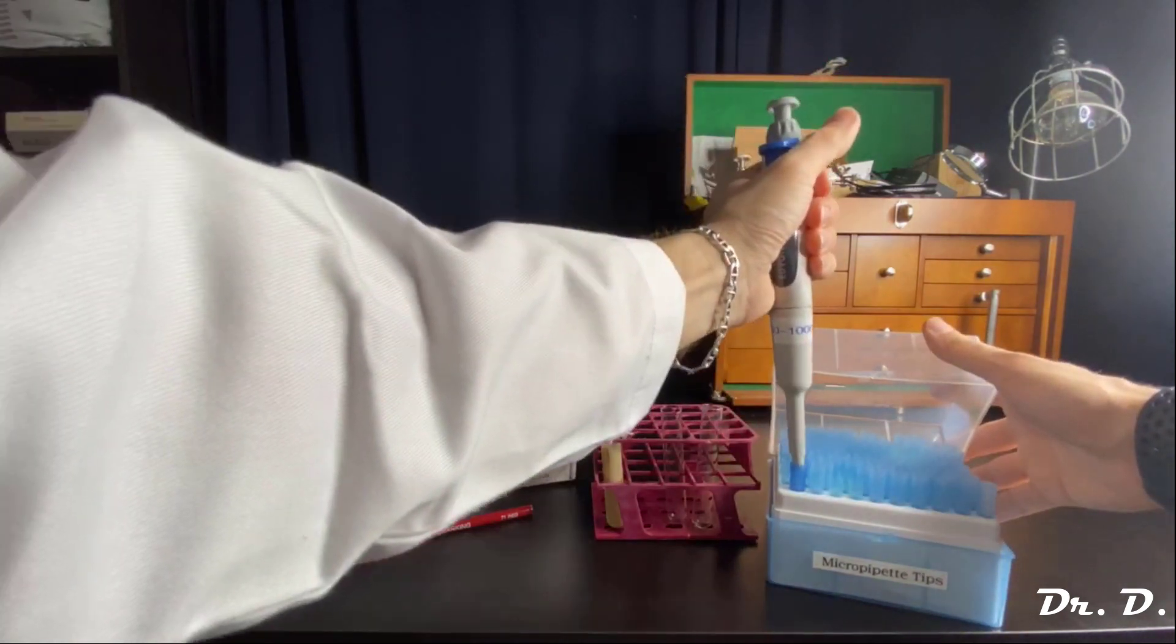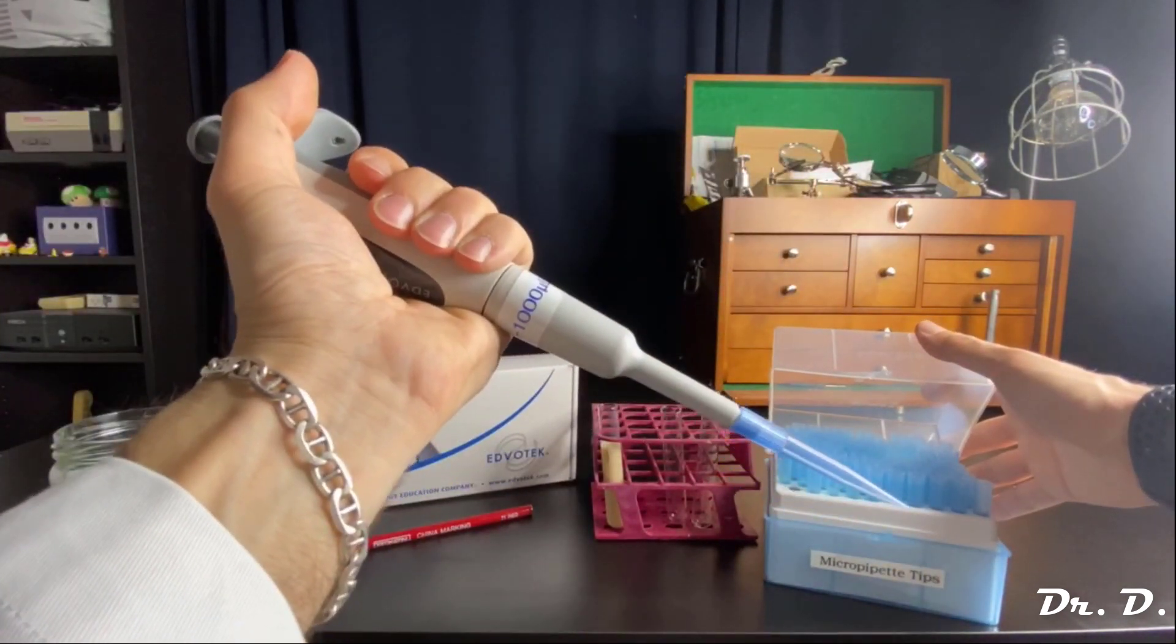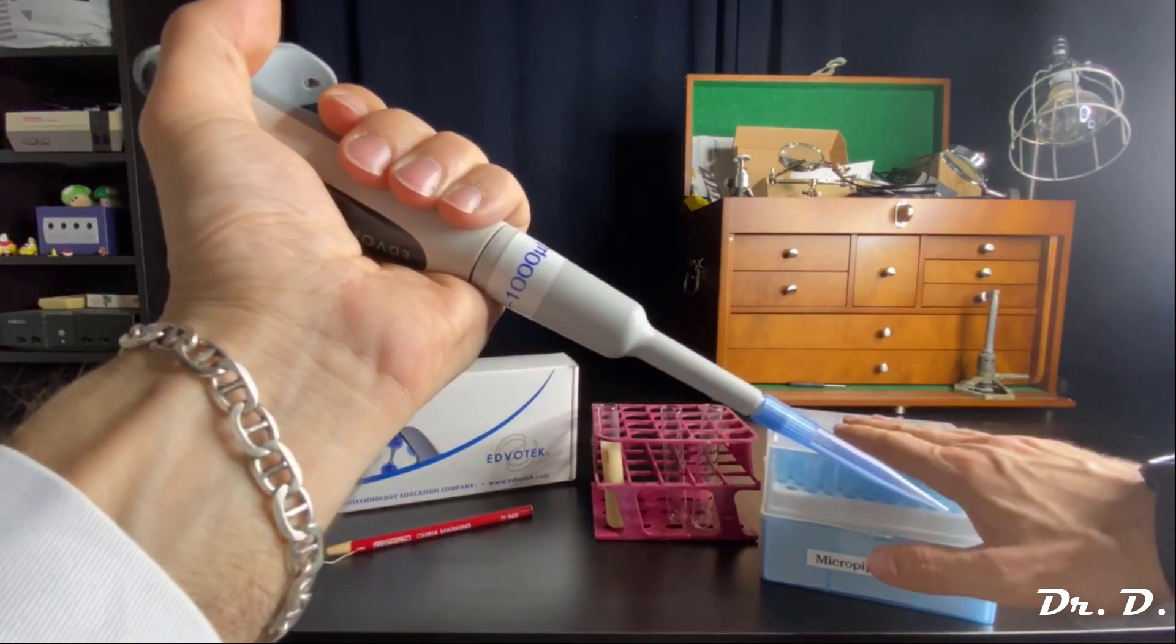Go ahead and open that up. Give it a couple taps. And there you go. There is your micropipette tip. Then go ahead and close that box.